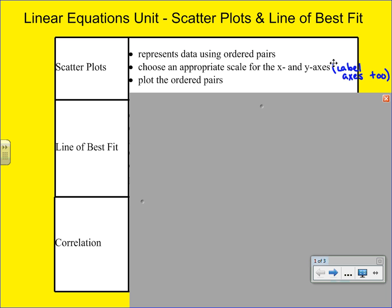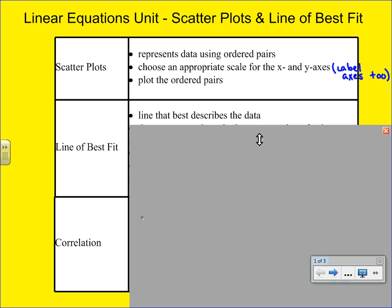Once you've drawn a scatter plot, you will create something called the line of best fit. We call this the line that best describes the data. And you may wonder, well, how do I know if my line is going to describe the data well? And so there's a couple tips that we'll give you to help you determine if your line is a good line.